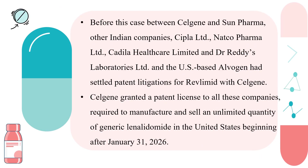Before this case between Celgene and Sun Pharma, other Indian companies — including CIPLA, Natco, Cadila, and Dr. Reddy's Labs — as well as US-based Alvogen also settled patent litigation with Celgene. In all these cases, Celgene granted a patent license to all these companies, required to manufacture and sell an unlimited quantity of the generic drug in the US beginning after January 31st, 2026.